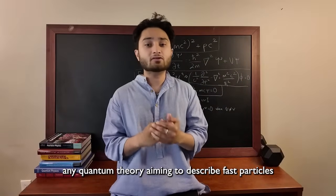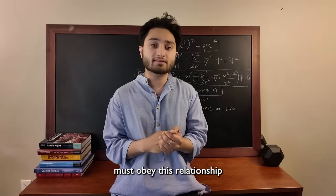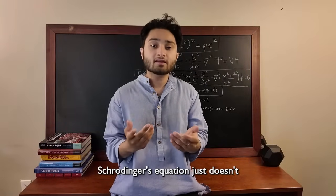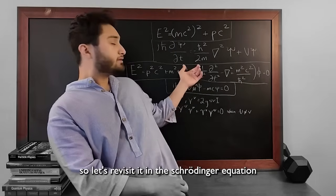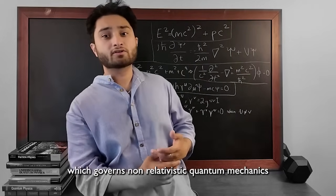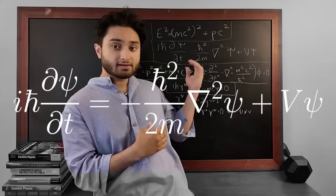Any quantum theory aiming to describe fast particles must obey this relationship. Schrodinger's equation just doesn't, so let's revisit it. In the Schrodinger equation, which governs non-relativistic quantum mechanics, which looks like this,